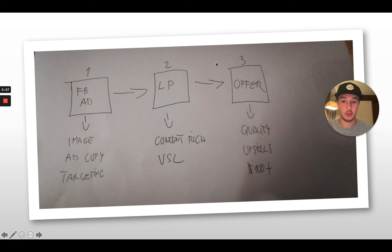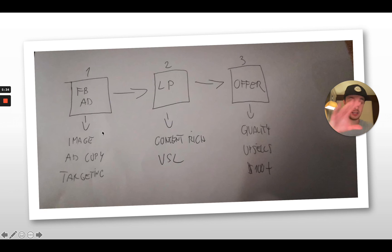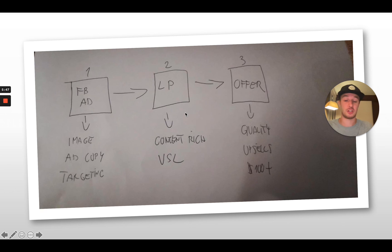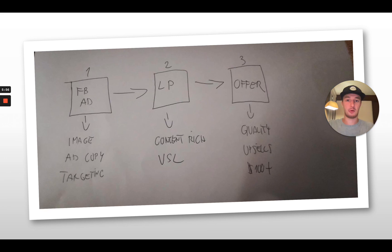Now here is my full method. First, it's the Facebook ad — you have to have a great image that gets attention and curiosity, a lead ad copy using Attention, Interest, Desire, and Call to Action, plus great interest-based targeting. The second step is having a landing page, which should be content-rich, because if you have a simple page with just a buy button it will not work. I use a special framework for the landing page that I give to my students — if you want to know more, please let me know below this video.